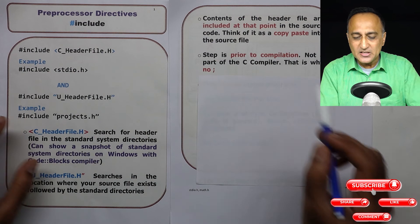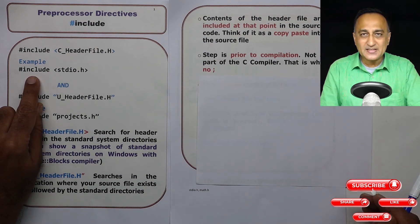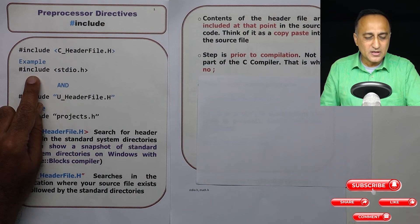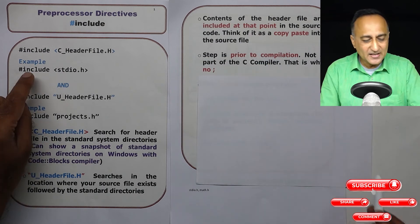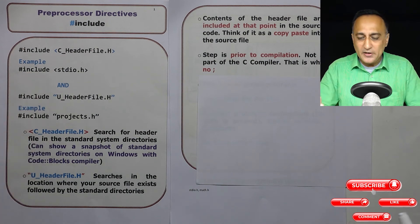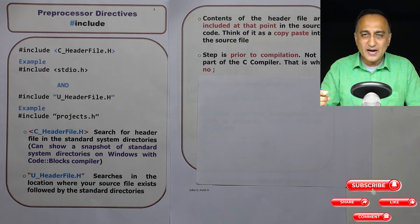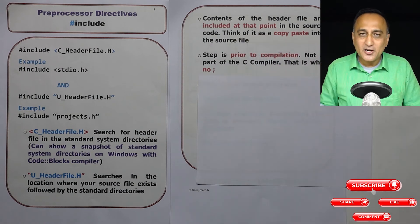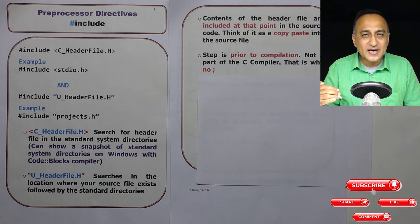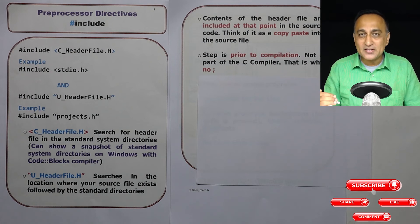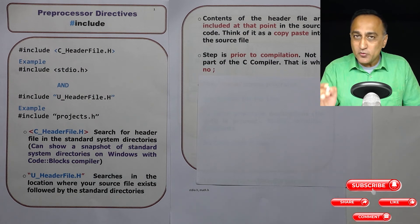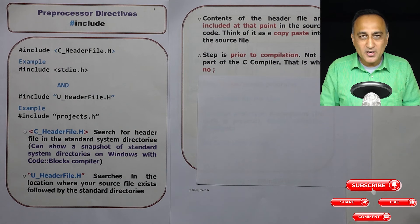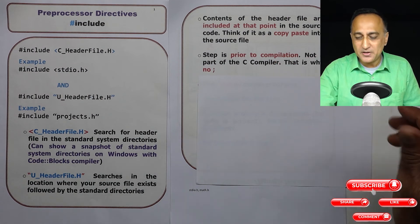Now let's try to understand what hash include really does for you. When the preprocessor software encounters the hash include statement, at that particular point in your source code — which is hello.c — it will open stdio.h, copy that file, and insert it at that particular point in your source code. So you can think of this as a copy-paste. In a later video, I'm going to show you the journey of the C program from source code to executable, where you will see how and where it is included. The preprocessor is a software which comes into picture even before compilation happens.